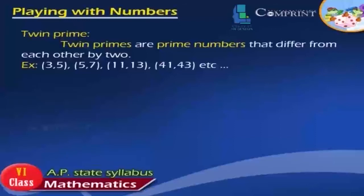Twin Primes: Twin primes are prime numbers that differ from each other by 2. Examples: (3, 5), (5, 7), (11, 13), (41, 43), etc.